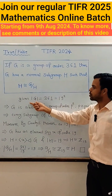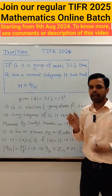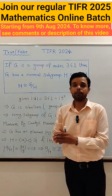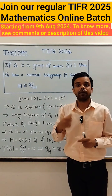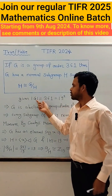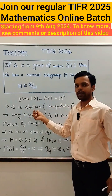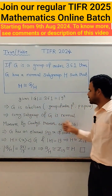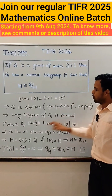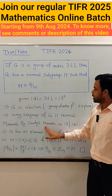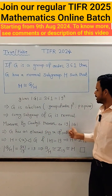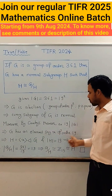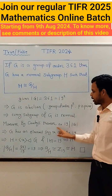The answer is true. Since the order of G is 19 squared, and we know that every group of order P squared, where P is prime, is abelian. So G is abelian, and hence every subgroup of G is normal. Moreover, by Cauchy's theorem, since 19 divides the order of G, G has an element of order 19.